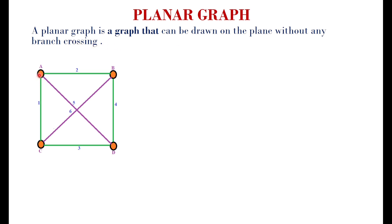Consider this graph — here two branches are crossing with each other. We can say that this is the non-planar graph, but actually this is not a non-planar graph; this is a planar graph. I am going to explain how it is a planar graph. Have to take any one branch and draw the branch outwardly. There is no branch crossing occurs, so we can say that this is the planar graph.